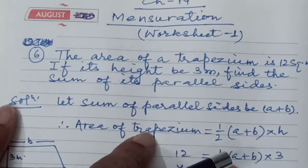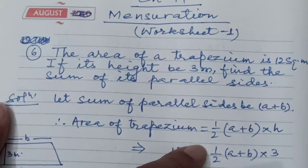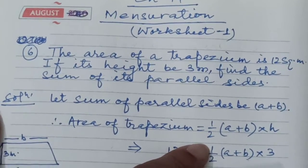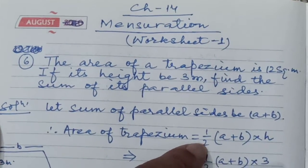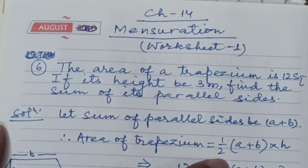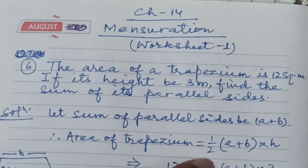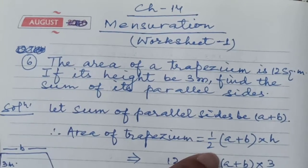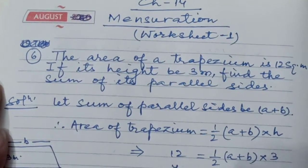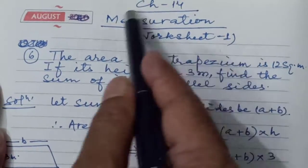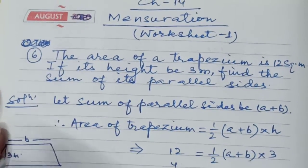Chhetra means area of rectangle, area of square, area of rhombus, and so on. But today I will discuss the area of trapezium. This is the second day of mensuration and I will discuss the remaining questions of worksheet 1, starting from question 6.